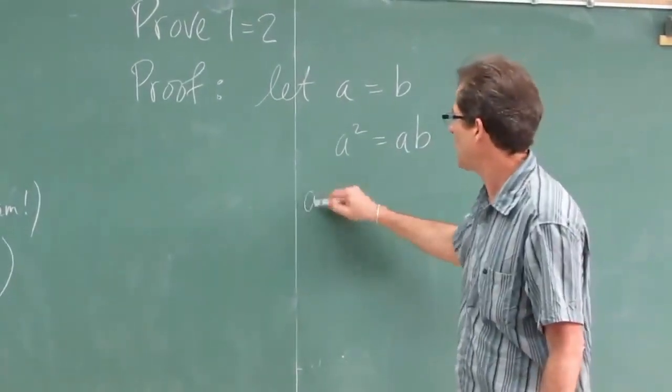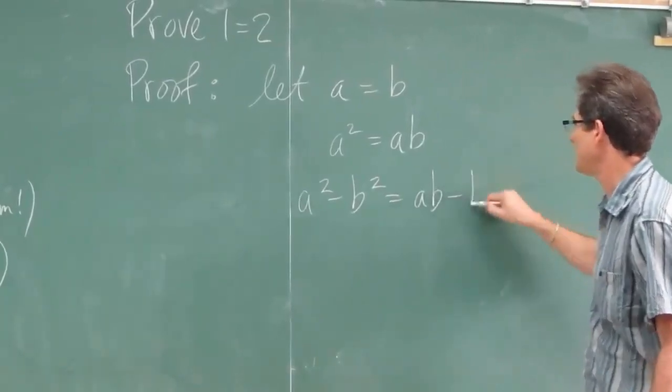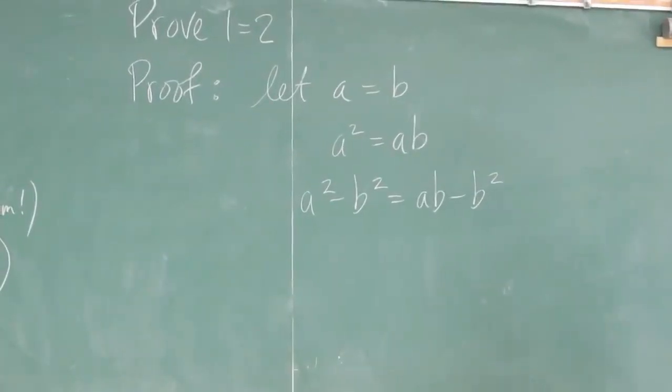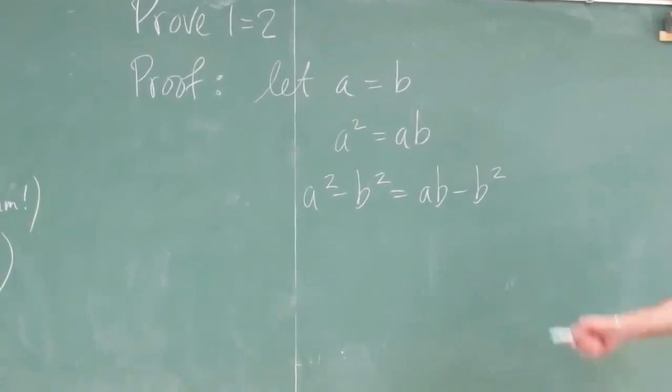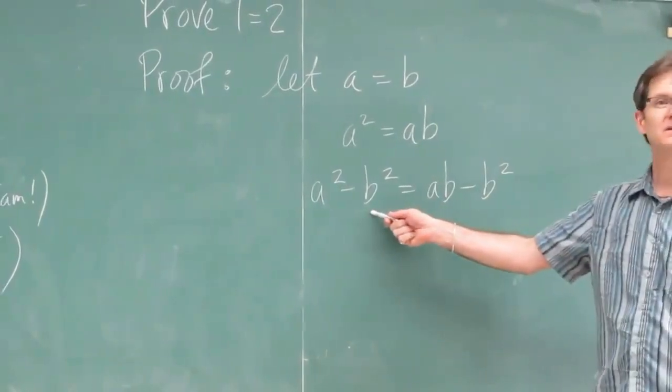Then subtract B squared from both sides. All legal operations. Then you can factor both sides by a different method. Left hand side, difference of squares.